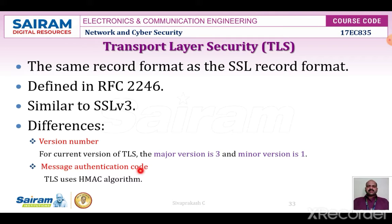The second difference is the message authentication code. There are two differences between SSL version 3 and TLS regarding MAC: one is the MAC scheme — the actual algorithm and scope of the MAC calculation — and second, TLS makes use of the HMAC algorithm defined in RFC 2104. HMAC of a message is computed as H((key XOR opad) concatenated with H((key XOR ipad) concatenated with the message)). That is a major difference between SSL version 3 and TLS.